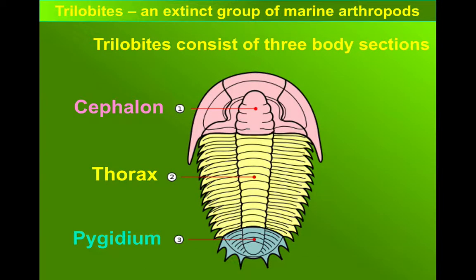The three divisions of the trilobite shell that we're particularly interested in are the ones shown here: the Cephalon, the Thorax, and the Pygidium.